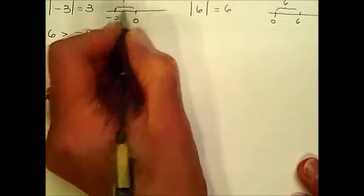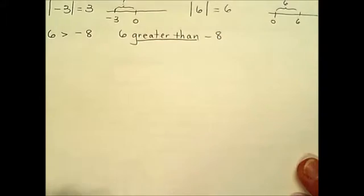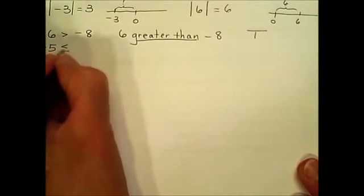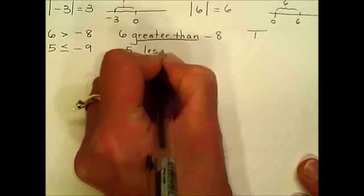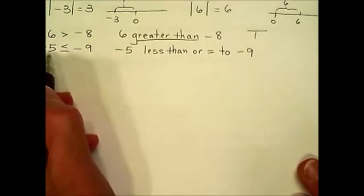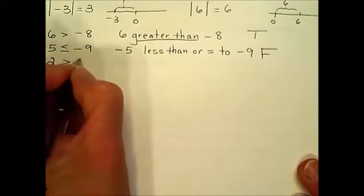Reviewing some symbols used in the math world: if we have the expression six is greater than negative eight, you may see problems that ask you to write the meaning, and then ask whether that's true or false. Anything to the right of a number is greater on the number line, so this would be true. If we have an inequality using less than or equal to, we would say the first number is less than or equal to the second. Comparing negative five and negative nine: negative five is to the right of negative nine, making it greater.